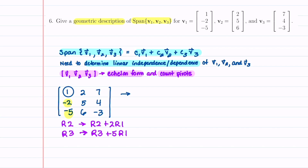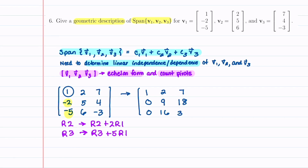Let's go ahead and do this. Our first row stays the same. Our second row becomes a 0, and multiplying the first row by 2 and adding it to our second row gives us 4 + 5 = 9, and 14 + 4 = 18. Now for the third row, multiplying row 1 by 5 and adding it to row 3 gives us 0, then 10 + 6 = 16, and 35 − 3 = 32.